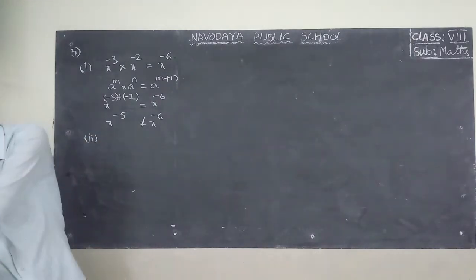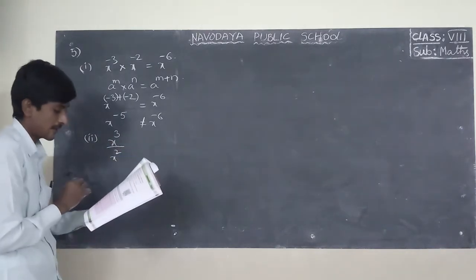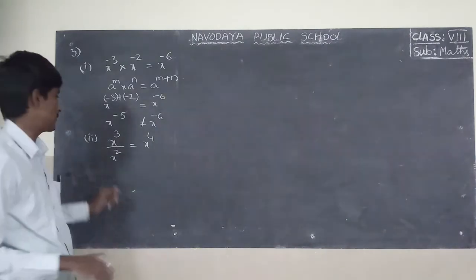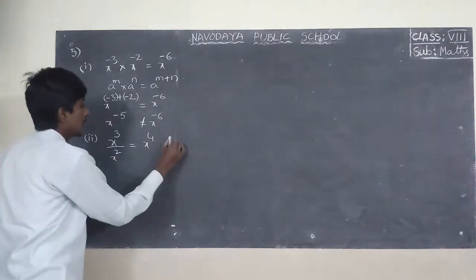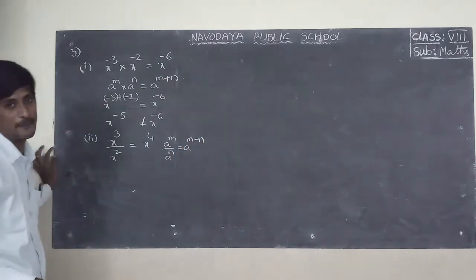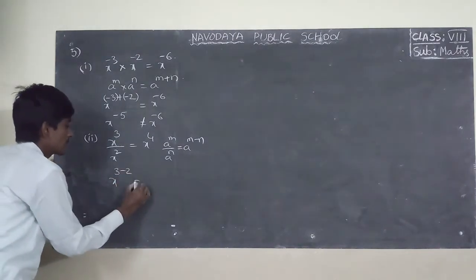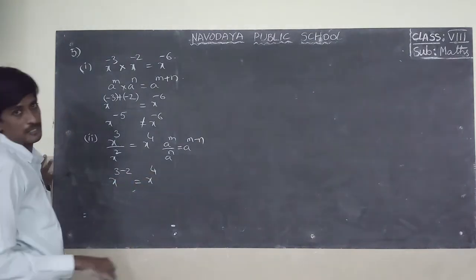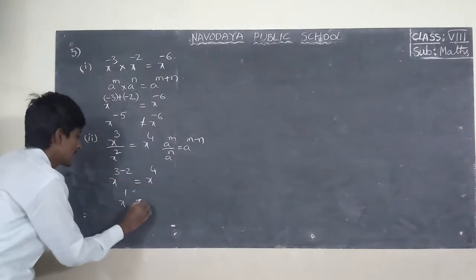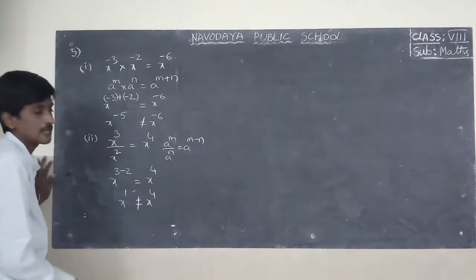Second one: X to the power of 3 divided by X to the power of 2 equals X to the power of 4 as given. Using A to the power of M divided by A to the power of N equals A to the power of M minus N: X to the power of 3 minus 2 equals X to the power of 1, not X to the power of 4. This is also wrong.